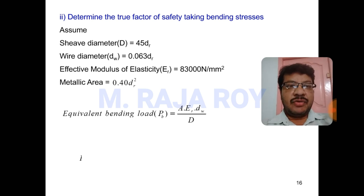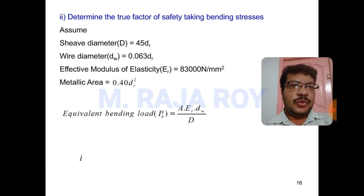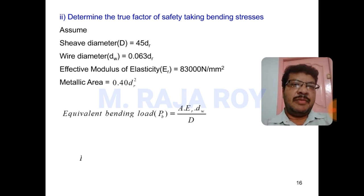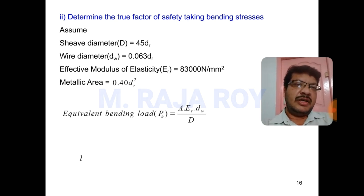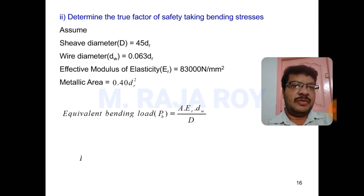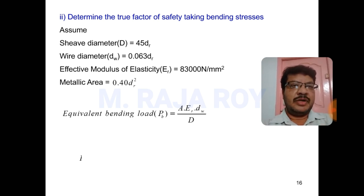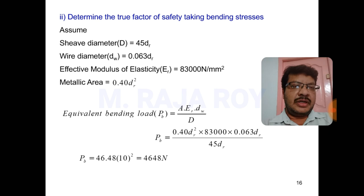For the second question, we need to find the equivalent bending load using the equation: P_B = A × E_R × d_w / D, where A is the metallic area, E_R is the effective modulus of elasticity, d_w is the wire diameter, and D is the sheave diameter. When these values are not given, standard relations are used: D = 45 D_R, d_w = 0.063 D_R, metallic area A = 0.4 D_R², where D_R = 10 mm. The effective modulus of elasticity is given as 83,000 N/mm². From this, calculate the P_B value.